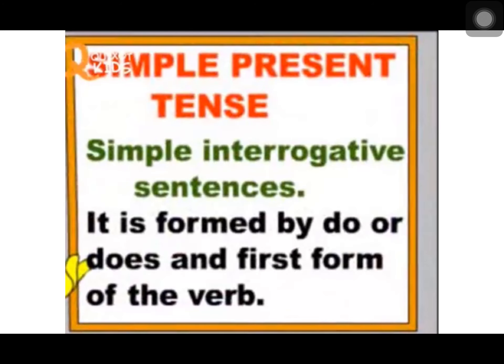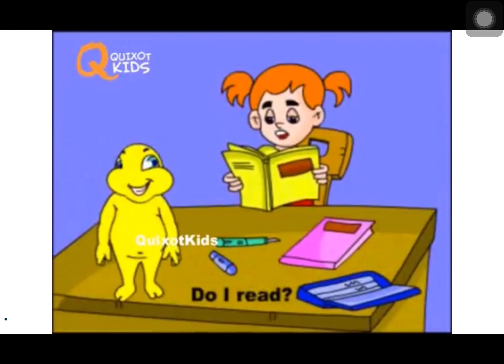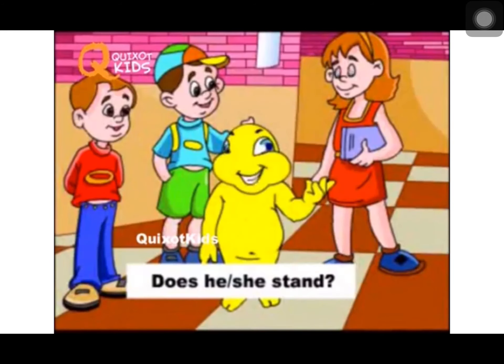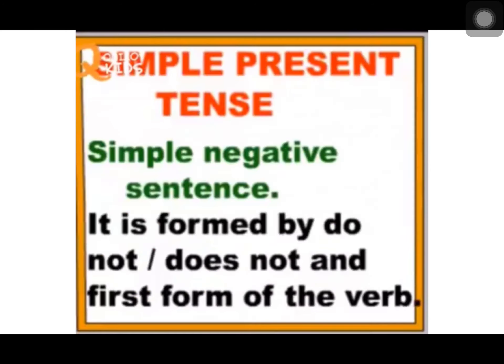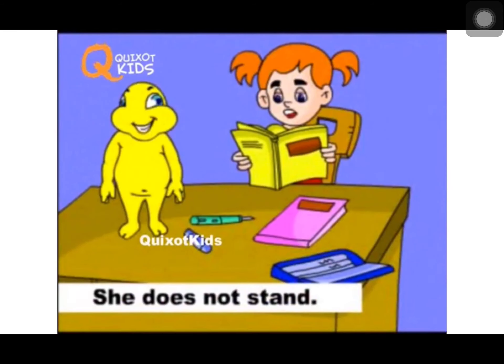Next one is simple interrogative sentences. It is formed by do and does at the beginning, followed by the first form of the verb. How we form interrogative sentences: do or does plus subject plus first form of the verb. For example: Do I read? Do we sing? Does it feel? Simple negative sentences are formed by do not or does not and the first form of the verb. For example: I do not read. She does not stand.